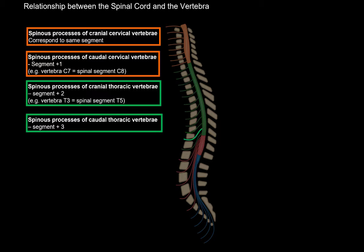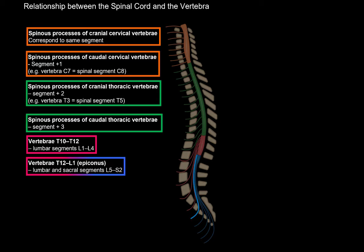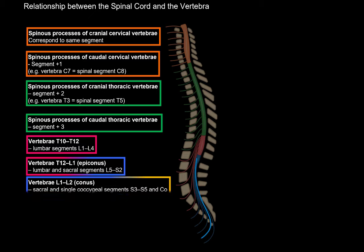For the caudal thoracic vertebrae, the difference grows to plus 3. Then T10-T12 vertebrae correspond to L1-L4 spinal cord segments. At the level of T12-L1, we're approaching the end of the spinal cord — this area is called the epiconus, meaning 'above the end,' since the medullary cone is at the very end. The epiconus corresponds to L5-S2 spinal cord segments. Then at the L1-L2 region, you have the remaining spinal cord from S3 to S5, plus 1 coccygeal segment. This scheme helps visualize how the spinal cord is arranged within the vertebral column.